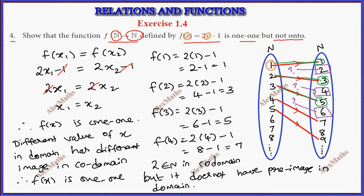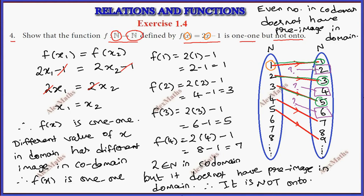To generalize, even numbers in the codomain do not have a preimage in the domain. That is the key point. It is not onto. Even numbers in the codomain do not have a preimage in the domain. That's why it is not an onto function.